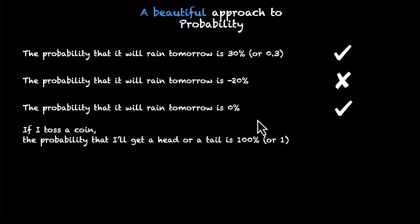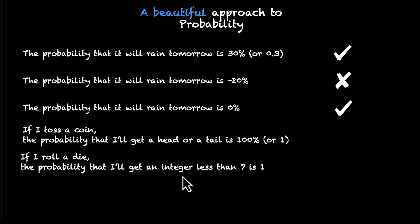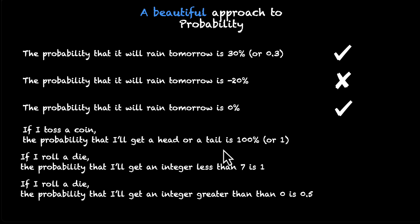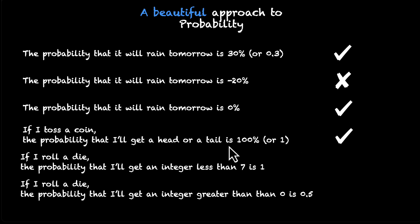If I toss a coin, the probability that I'll get a head or a tail is 100% or 1. When you toss a coin, you either get a head or a tail — those are the only two options. So you'll definitely get one of them and the chances of that is 100%. I'll either get a head or a tail and that's 100% guaranteed. So this does make sense.